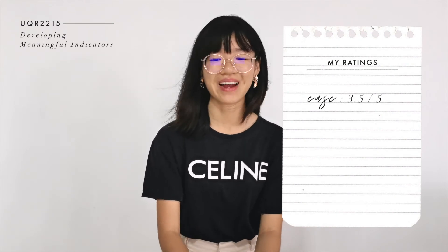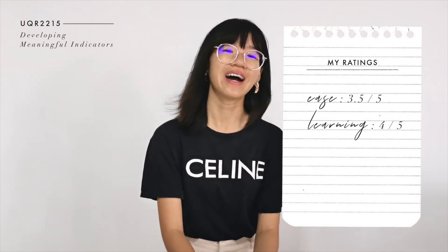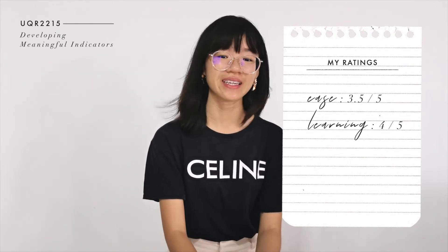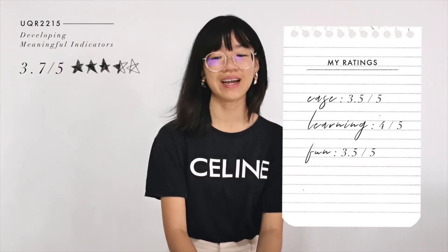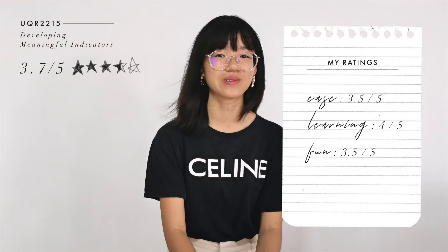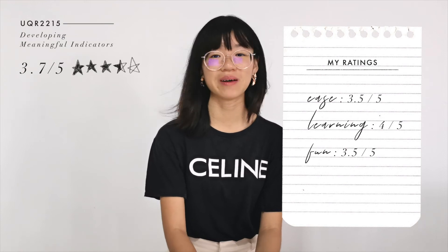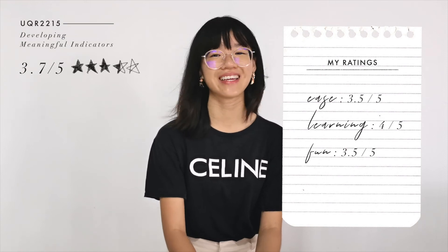My overall rating for this module would be 3.5 out of 5 for ease, 4 out of 5 for learning, and 3.5 out of 5 for fun, giving an average score of 3.7 out of 5 for UQR2215, Developing Meaningful Indicators.